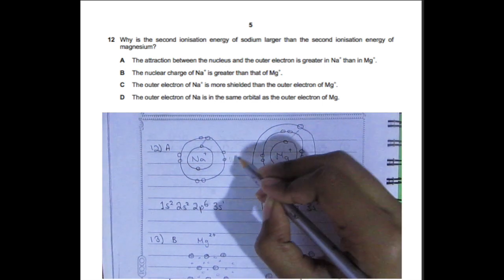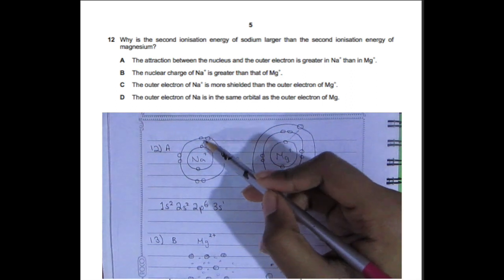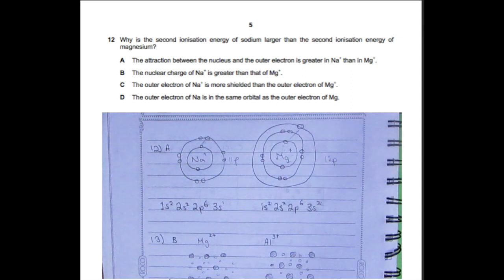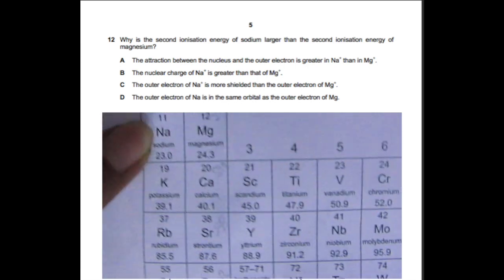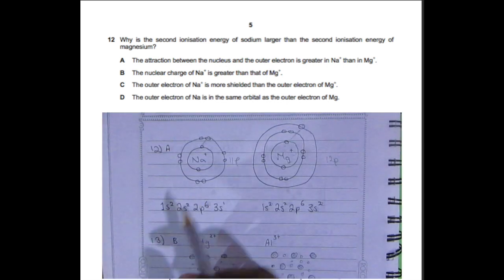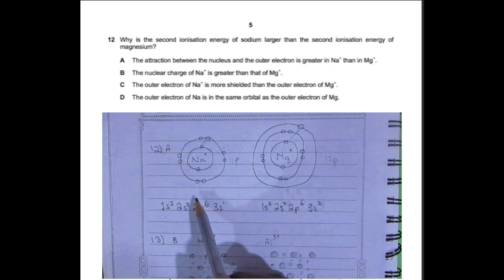B: The nuclear charge of sodium plus is greater than that of magnesium plus—that's not true because sodium has 11 protons, magnesium has 12. C: The outer electron of Na+ is more shielded than the outer electron of Mg+. No, that's the opposite. Magnesium is more shielded because it has three shells or two shells in front of it compared to sodium with only one shell in between.